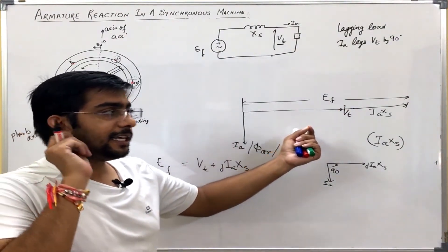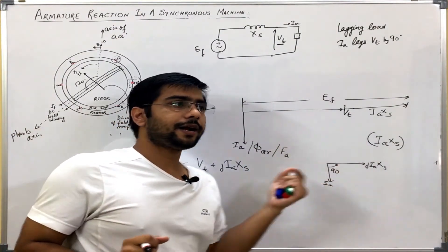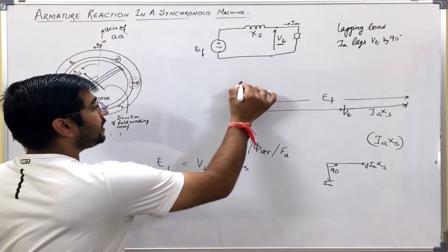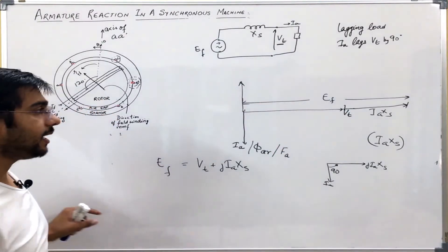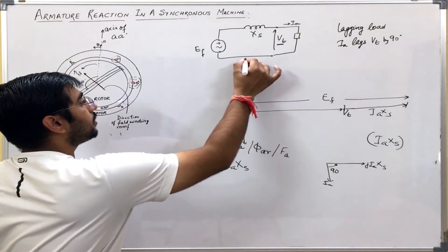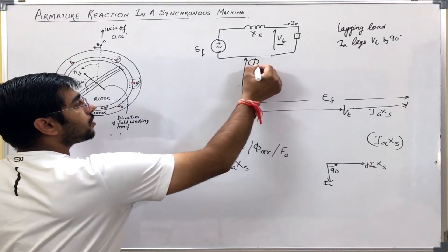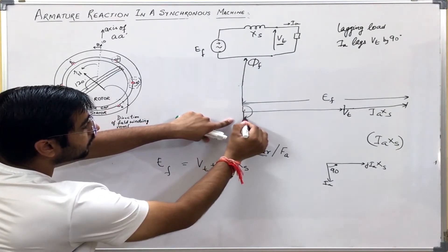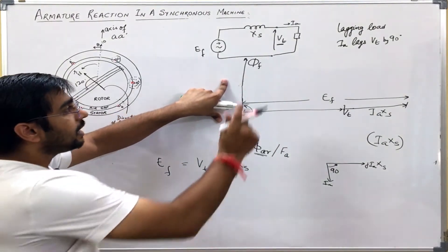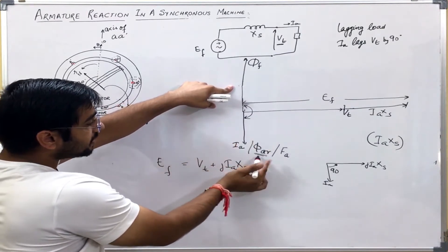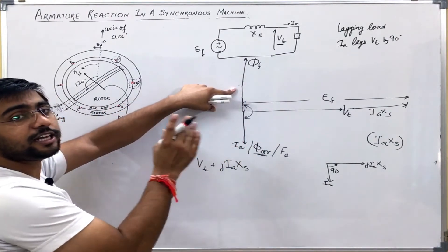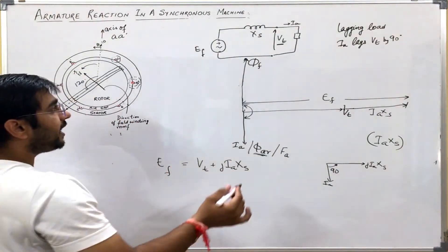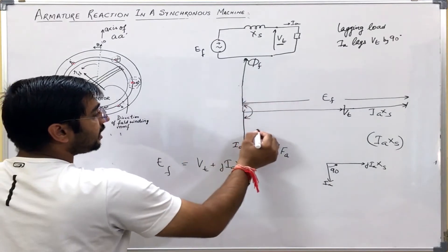Now, we have already seen that the EMF lags the flux by 90 degrees. So I can write that the flux which is due to the rotor alone will be in this direction, that is, leading Ef by 90 degrees. So this will be the initial rotor flux. But you see that the armature flux is completely opposite. So in this way we can see that for lagging current, this armature reaction flux has a complete demagnetizing effect on the rotor flux.